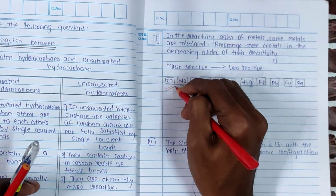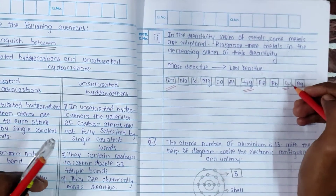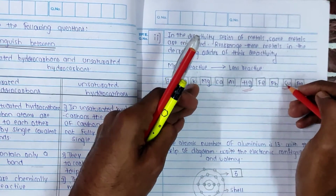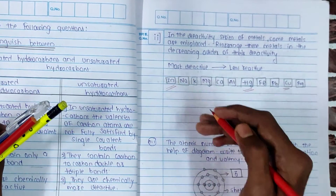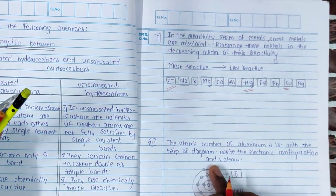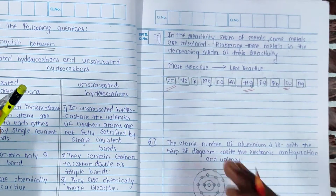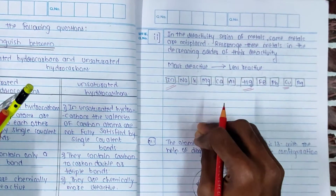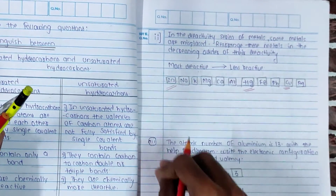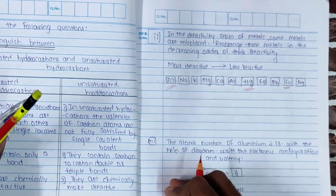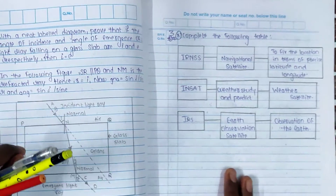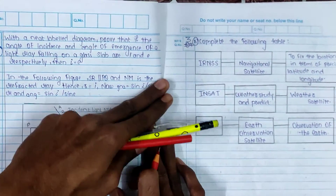Moving further ahead, for box-type questions, you will create them the same way. You can make a box, a circle, or any required shape. For all questions, you have to carry a geometry box in every paper. Whether it is Marathi, Hindi, science, algebra, history, or political science — always carry the geometry box.